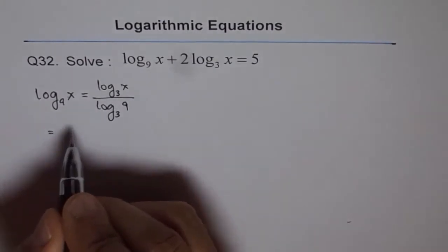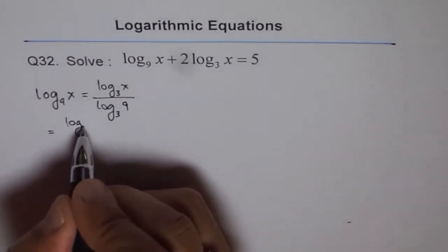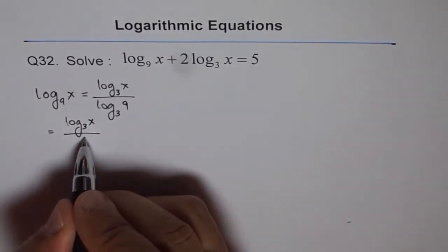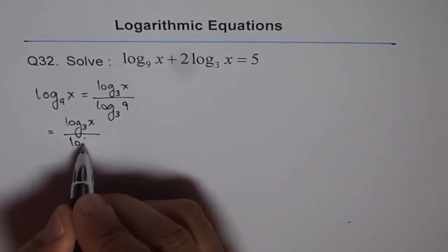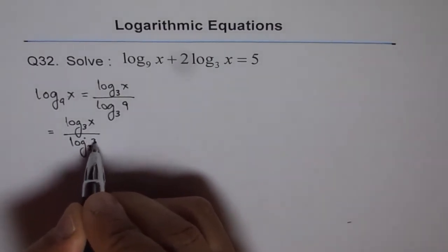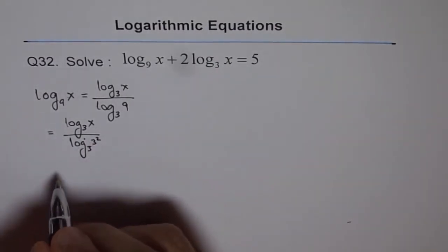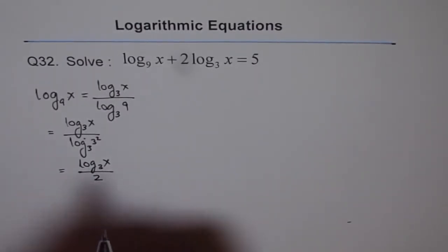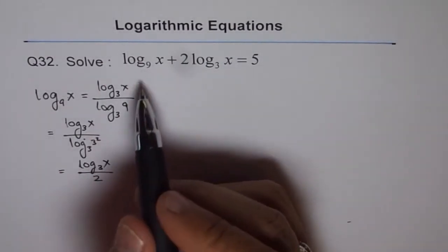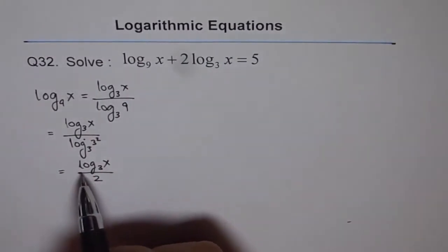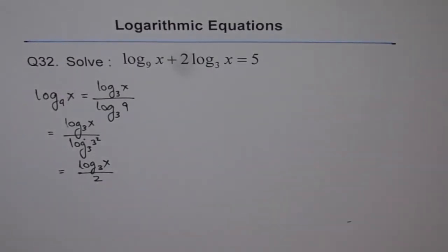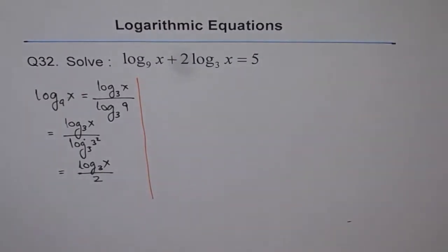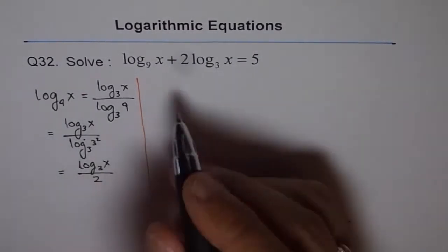This equals log base 3 of x over... since 9 is 3 squared, the denominator is 2. So we get log base 3 of x over 2. The first expression can be written as log base 3 of x over 2. We will replace base 9 with base 3 and then solve the equation.